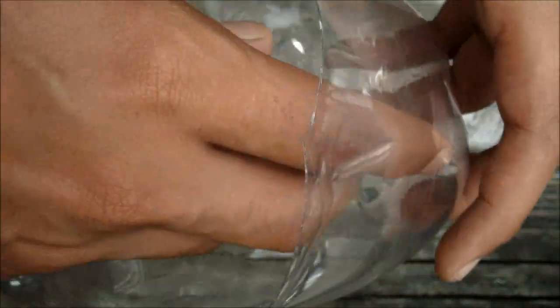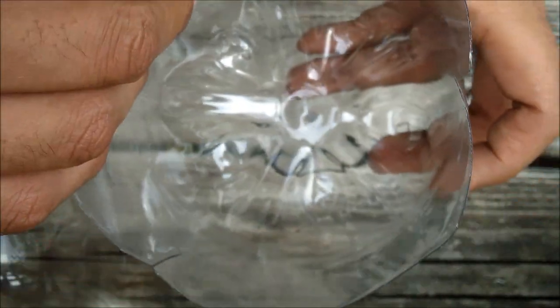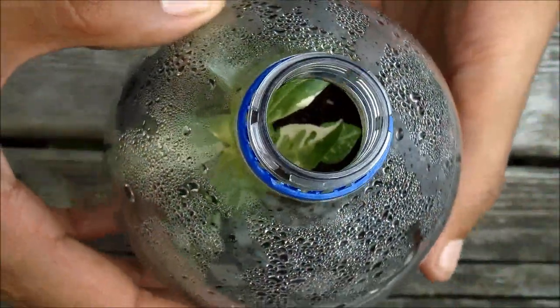The next step is to fill the bottom half with soil and plant your seeds. And here's what a ghetto greenhouse with a seedling looks like.